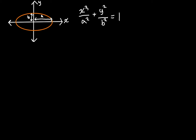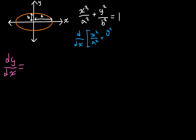Our final goal is to find what dy/dx is equal to. I'm writing it as dy/dx rather than f prime of x because this isn't a function — we're taking the derivative of y with respect to x at any given point. To do that, I'm going to take the derivative of both sides of our equation with respect to x.